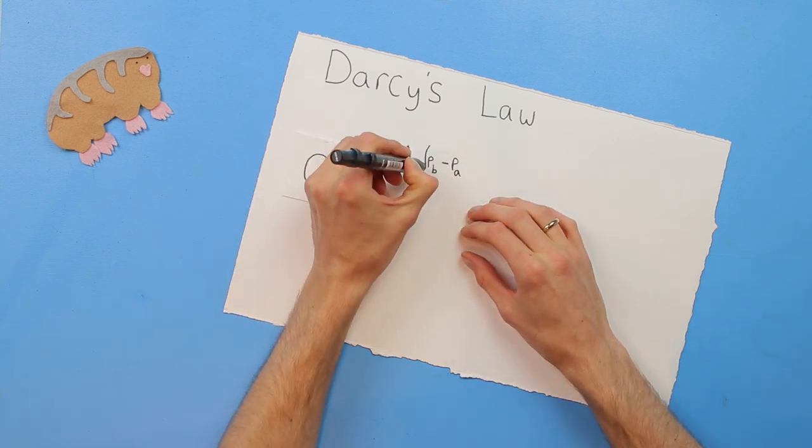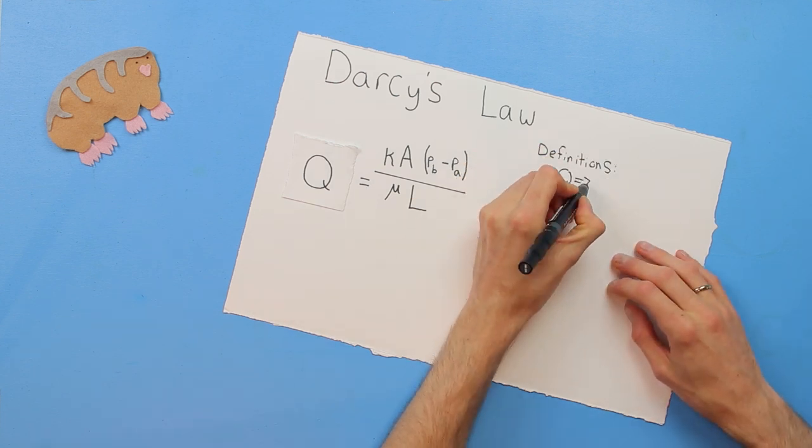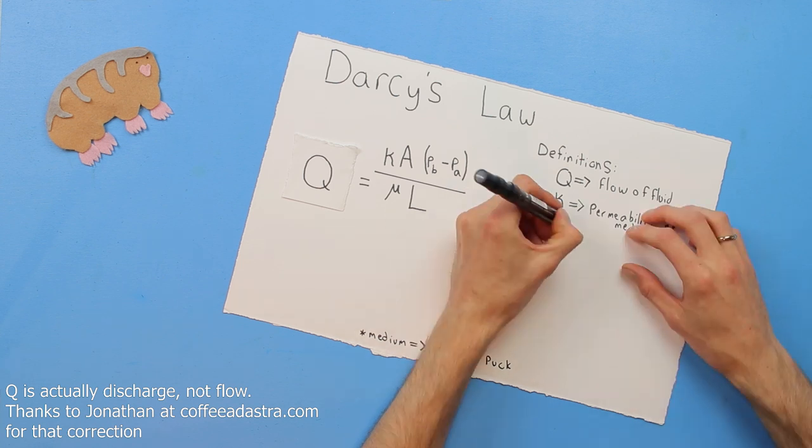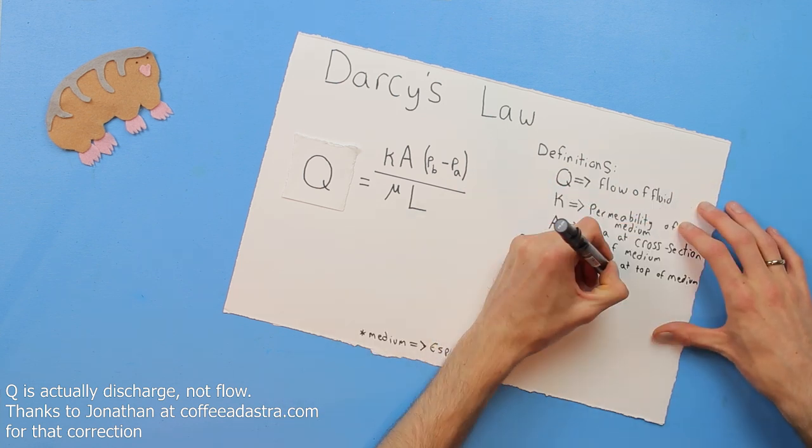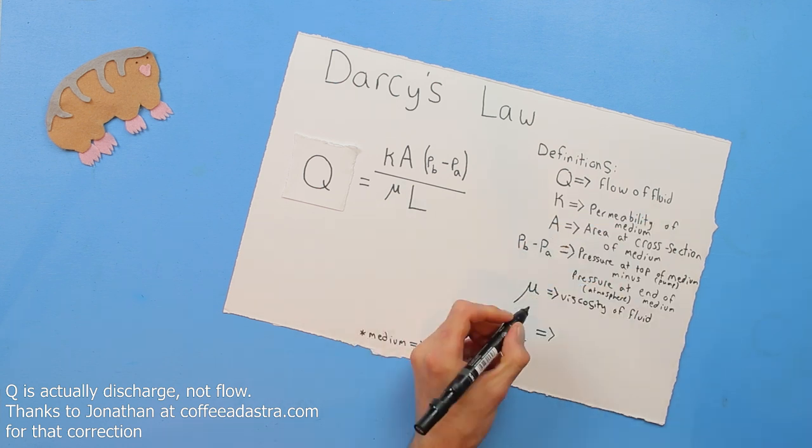Don't worry if you aren't comfortable with an equation like this, but here it is for those who are: q equals ka times pb minus pa over mu l. Where the variable q is the flow of the fluid, k is the permeability of the medium, a is the area at the cross section, pb minus pa is the total pressure drop between pump and atmosphere, mu is the viscosity, and l is the length the fluid has to flow through.